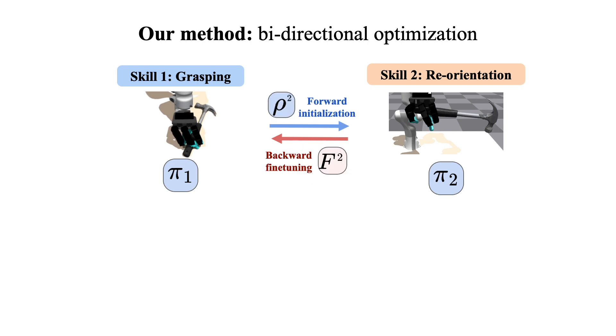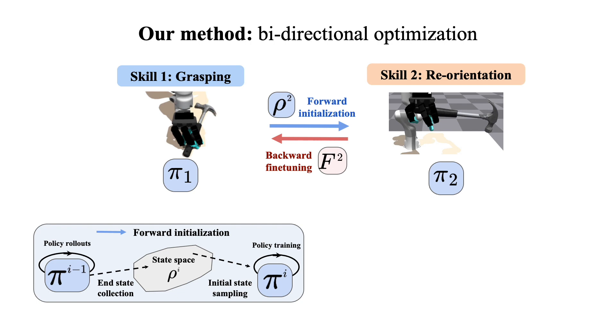More concretely, we introduce a two-stage pipeline consisting of a forward initialization and a backward fine-tuning. During forward initialization, once a prior policy has been trained, we gather an end-state distribution via policy rollouts. The initial states for training the subsequent policy is then sampled from this state distribution.